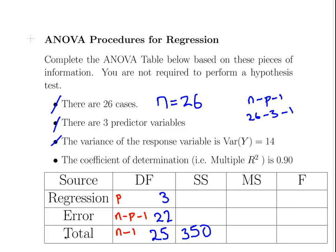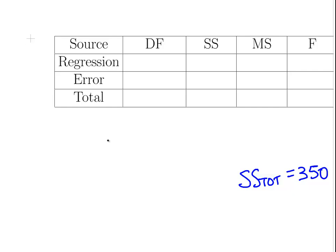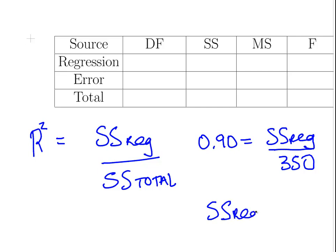Now the coefficient of determination is 0.90. R squared equals SS regression over SS total. So 0.90 equals SS regression over 350. You can work that out—SS regression is 315 by my calculations.